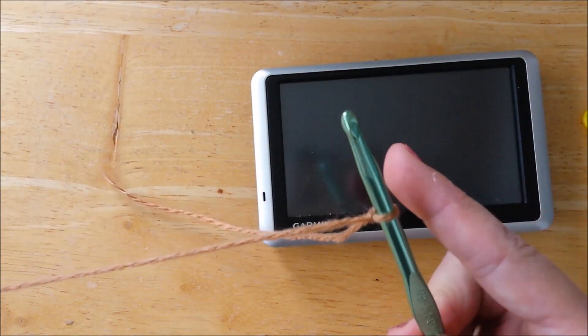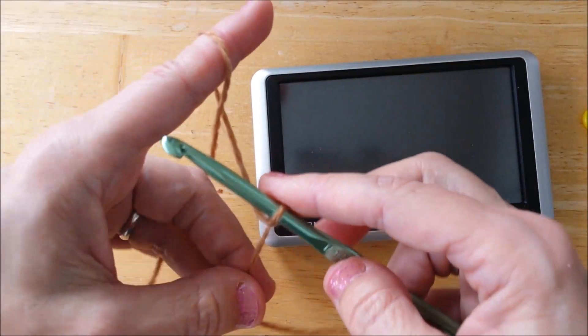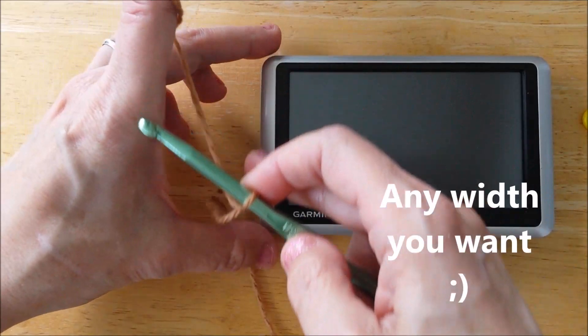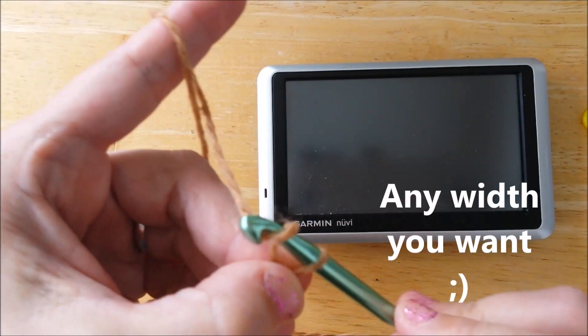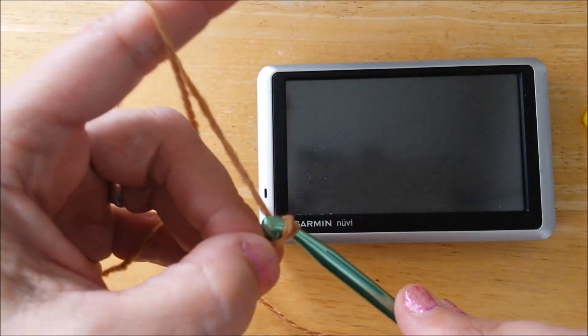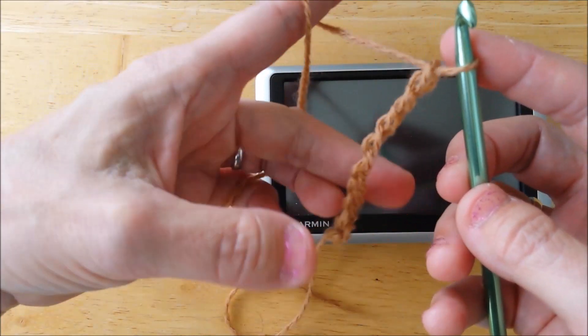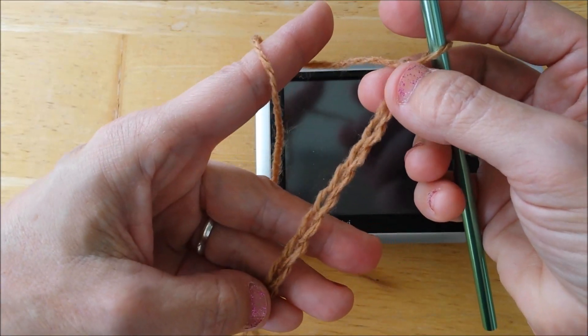Now I have my yarn on my hook. So I'm going to start with a row of chain stitches and I'm going to make my row of chain stitches be the width of my device. Let's get started. We're just going to yarn over, pull through. So now I have a row of chain stitches and you want to hold it so all the little V's are facing you.